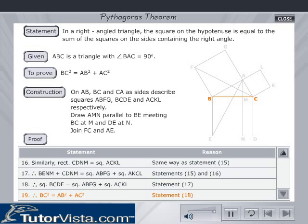Therefore, BC² = AB² + AC². Thus, we have proved the theorem.